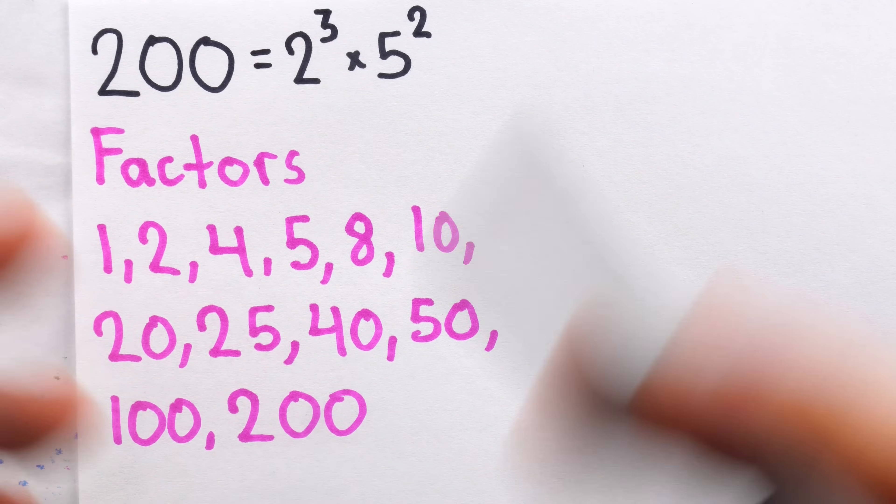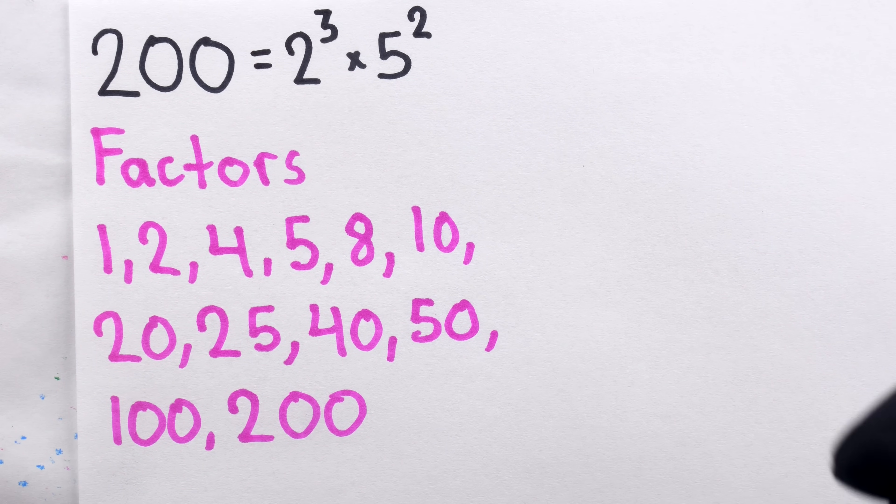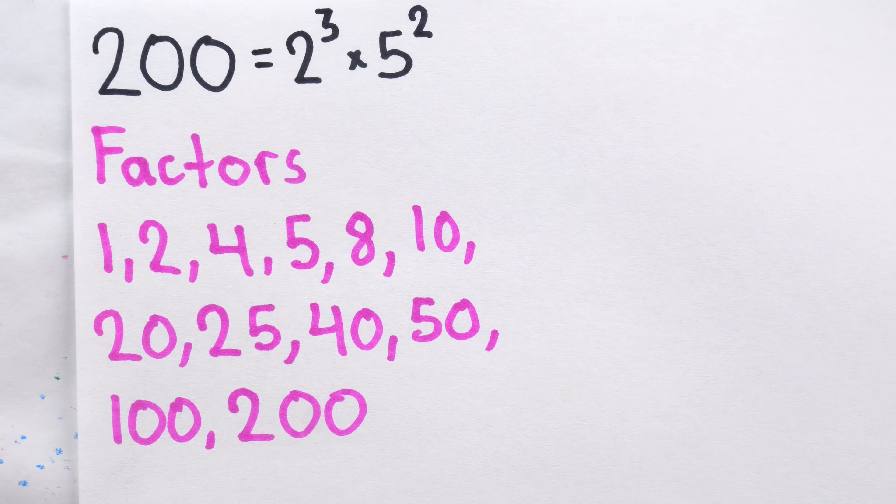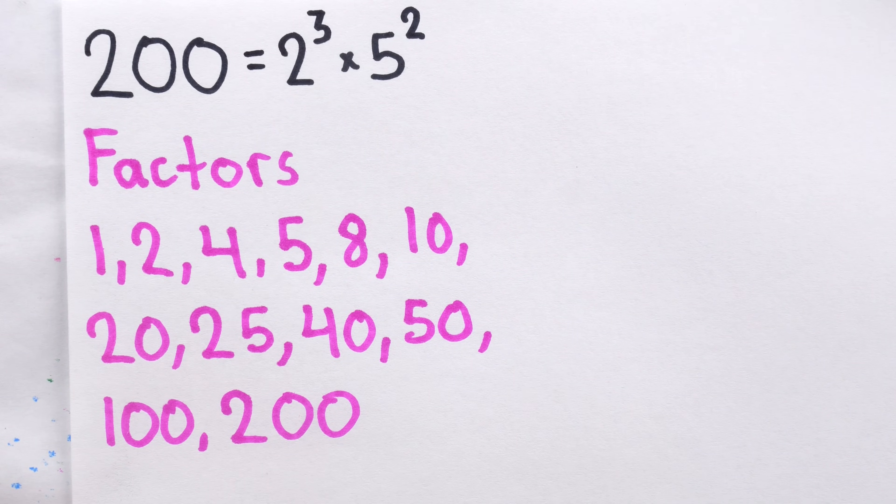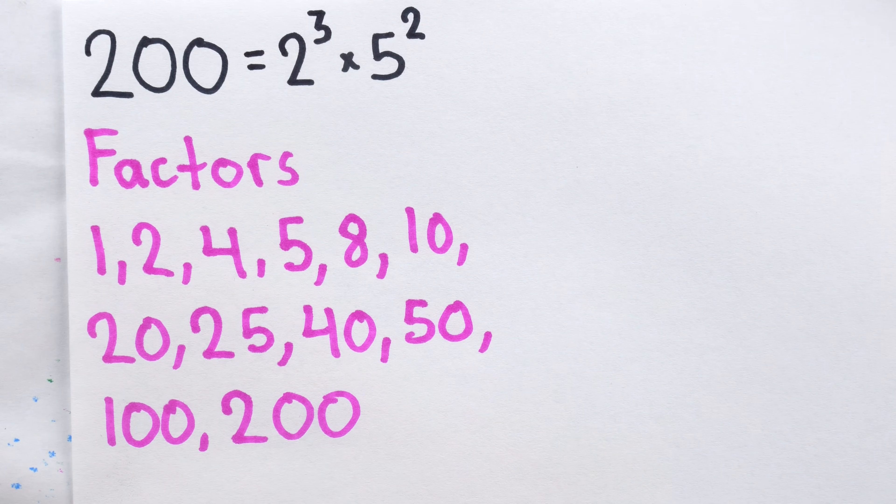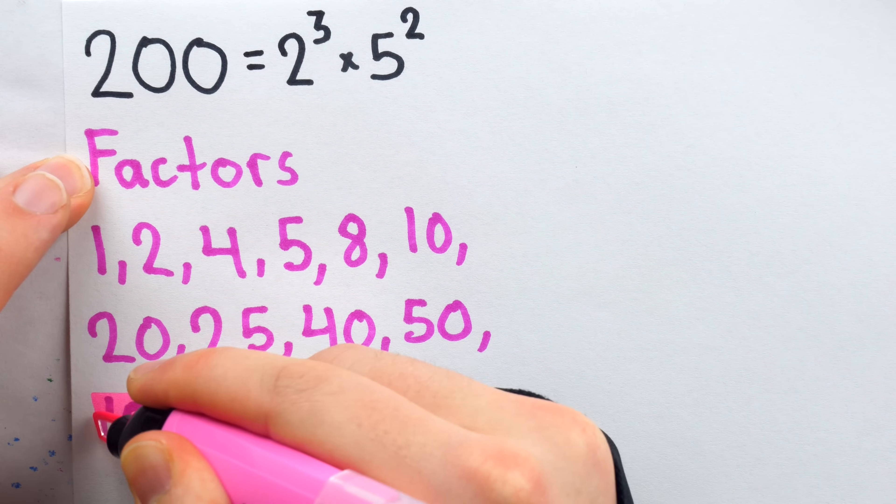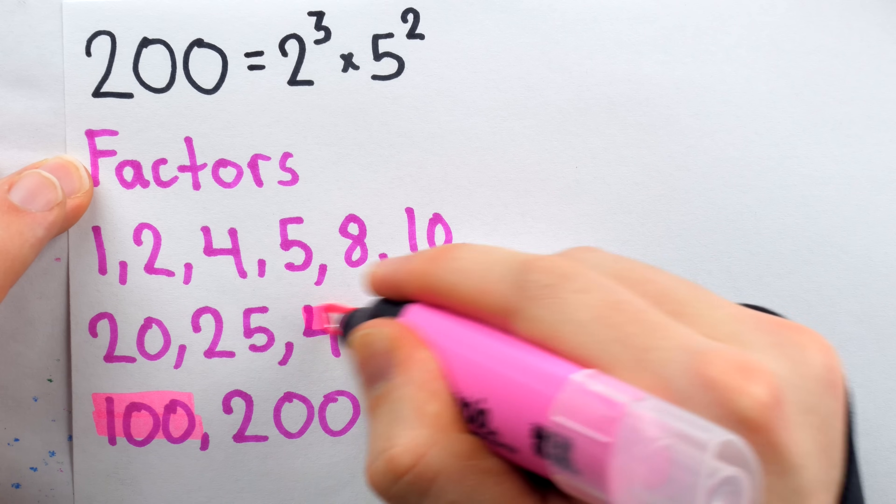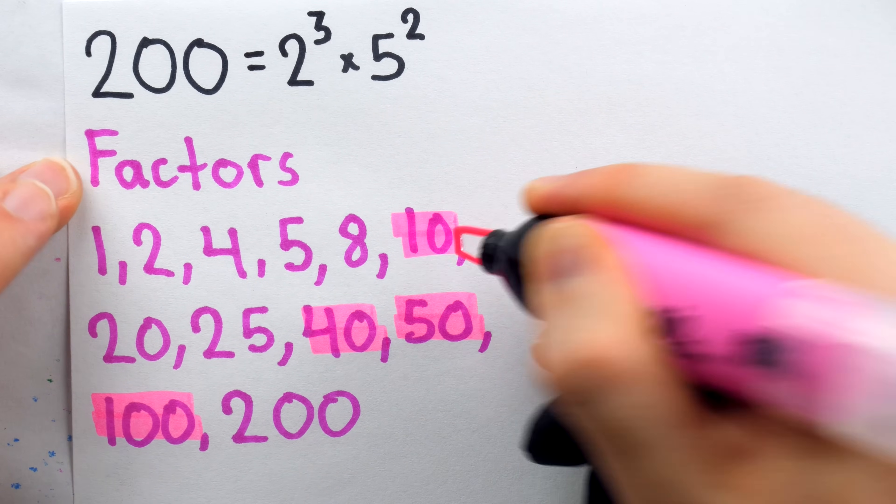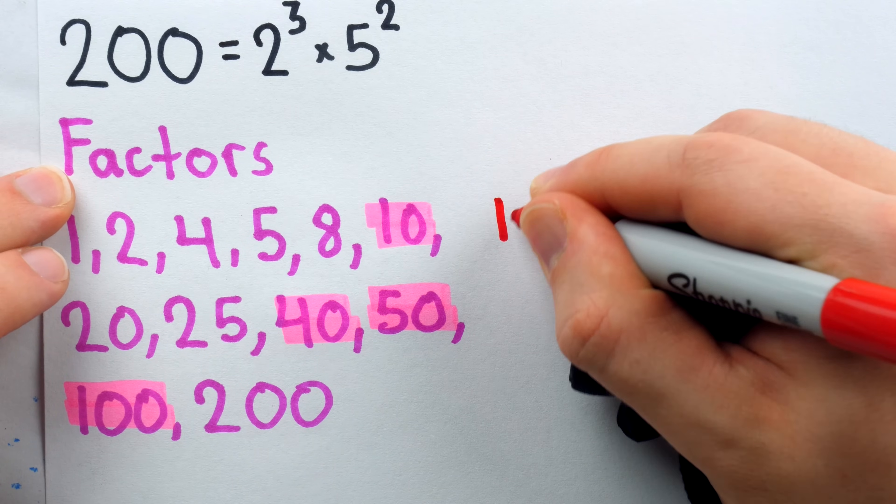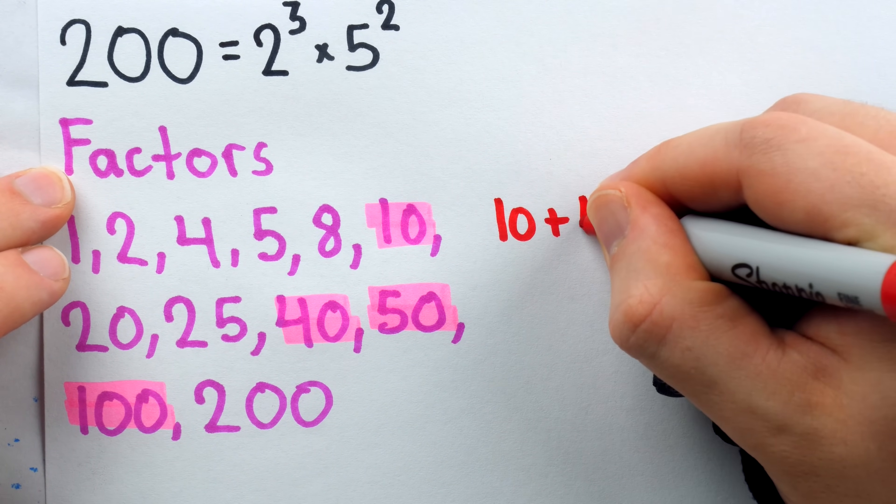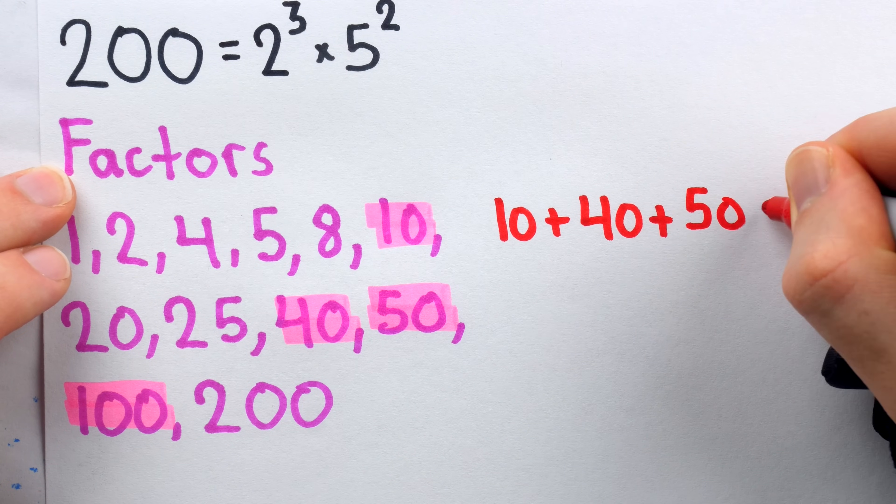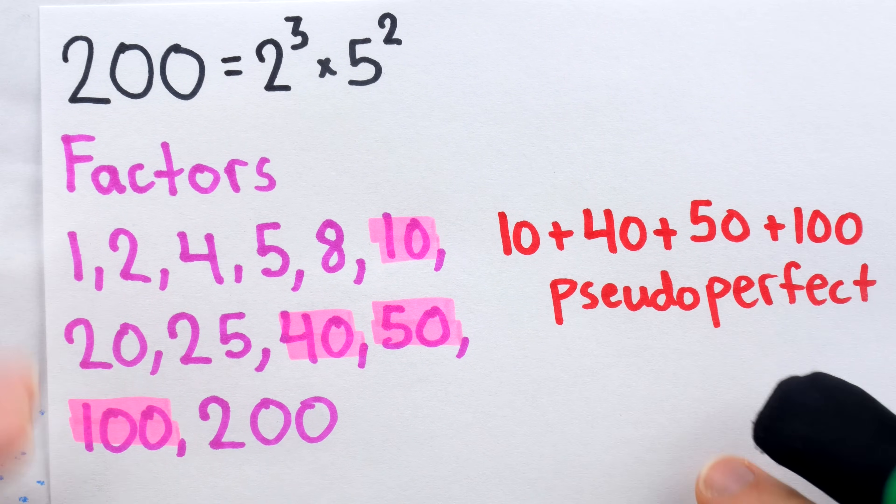So 200 isn't perfect, but hey, how picky can we be? We don't need a number to be perfect to go try to survive the curse of the haunted forest with it. But all hope is not lost, because 200 is pseudo-perfect. Indeed, if we take the factors of 200: 100, 50, 40, and 10, those do add to 200. And the fact that we can add up distinct factors of 200 to get 200 means that 200 is pseudo-perfect.